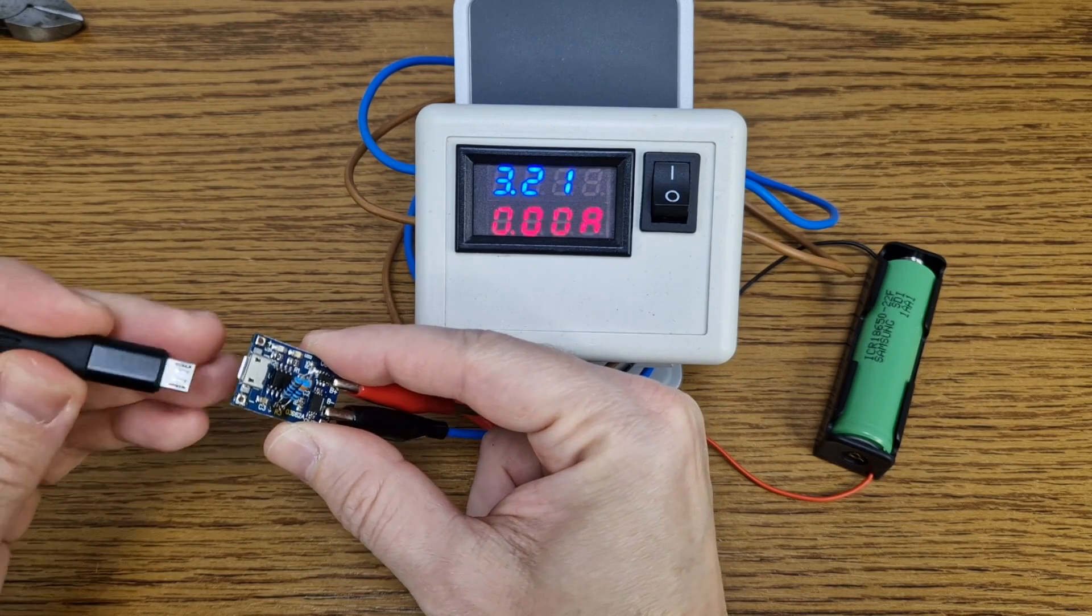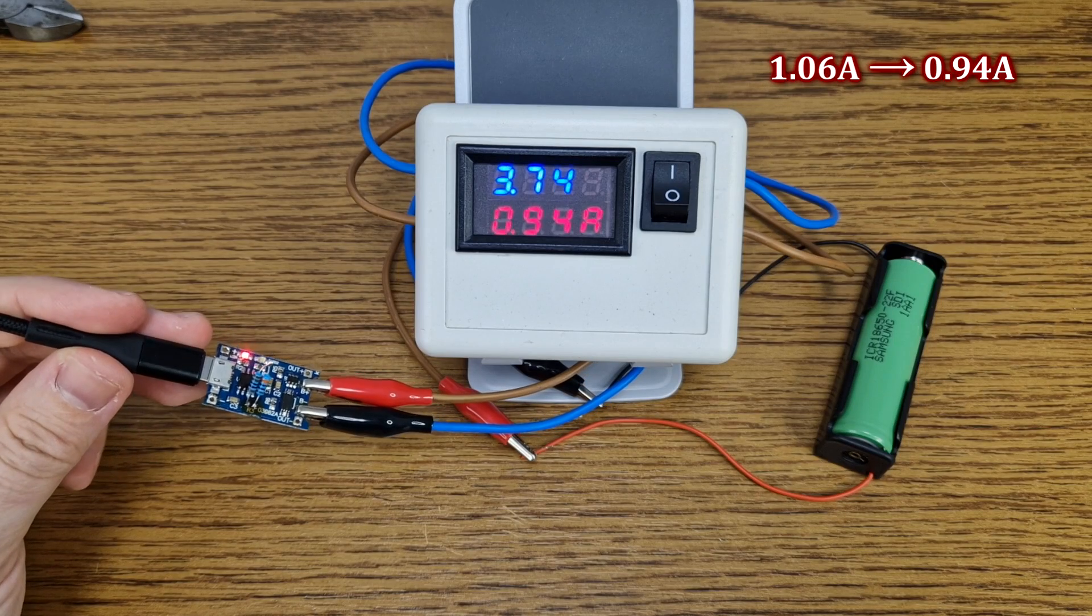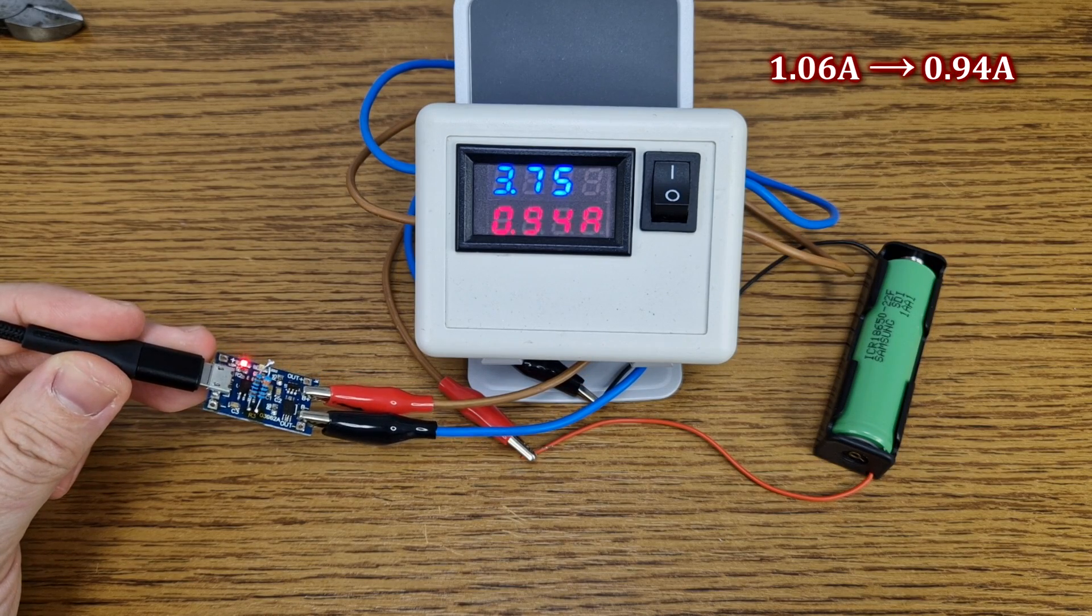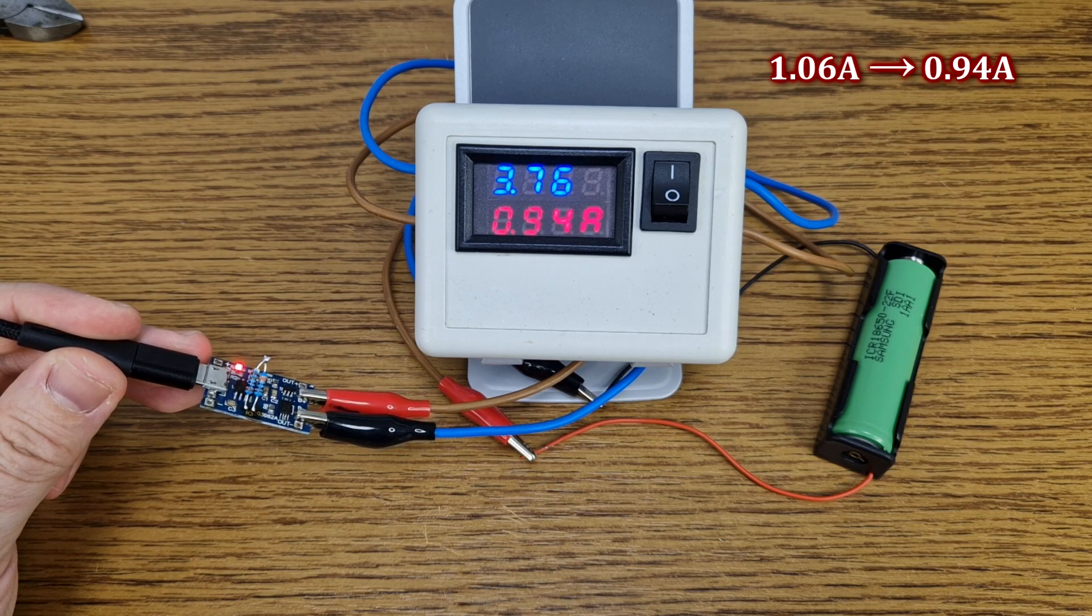Let's test it again. The charging current has decreased from 1.06 amps to 0.94 amps. So when I charge the lithium ion cell the integrated circuit will produce less heat inside the flashlight.